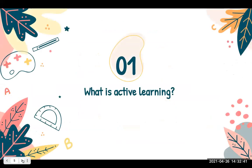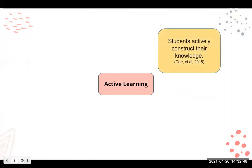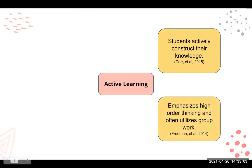Let's get started with what is active learning — taking you back to your college days and basic teaching courses. Active learning is where students actively, not passively, construct their knowledge. They create their own knowledge; they think, they're teaching themselves. It emphasizes higher order thinking and often utilizes group work. Employers tell us they want students to come out of high school more able to work in groups and independently.